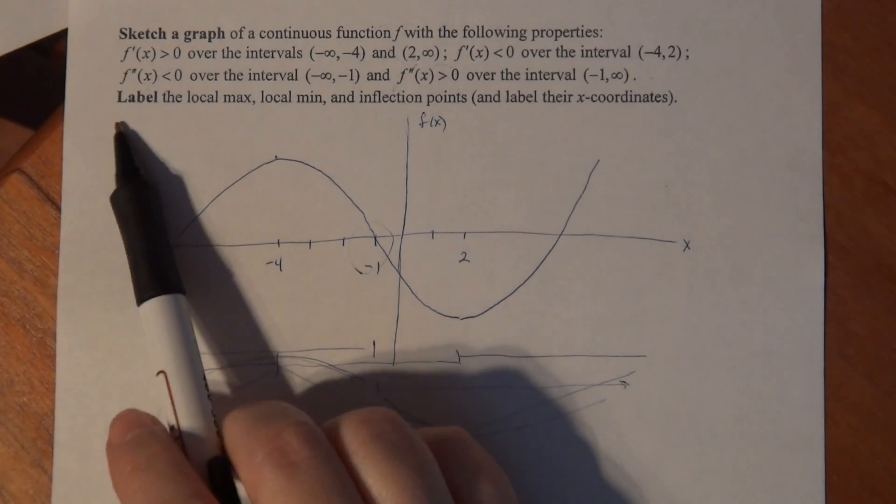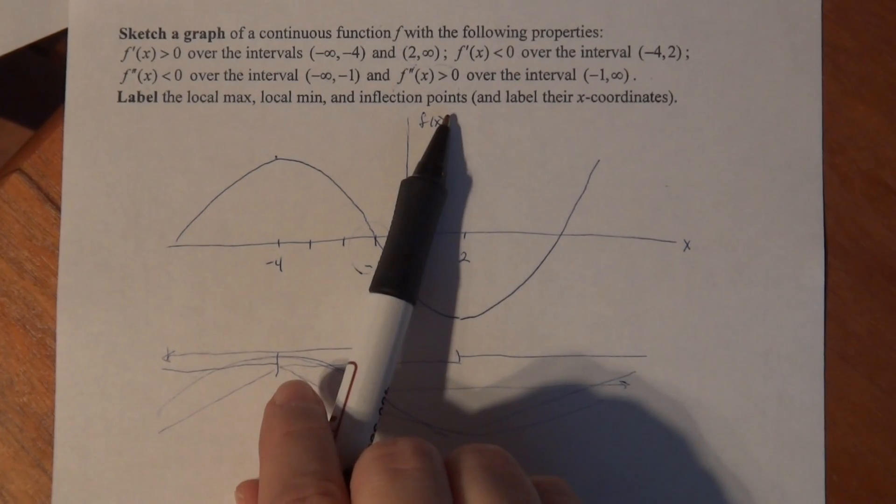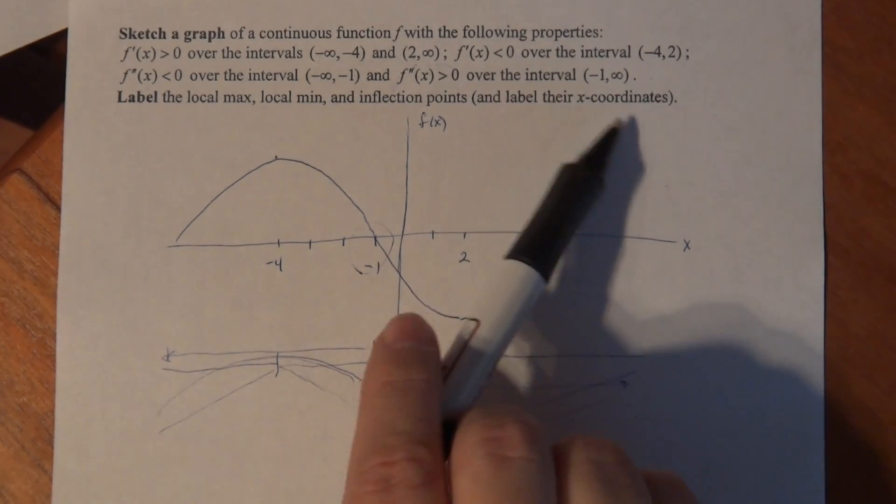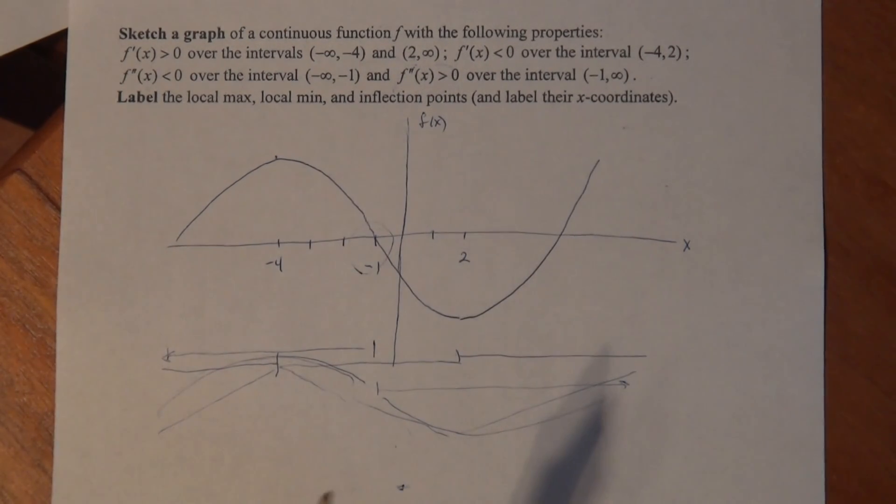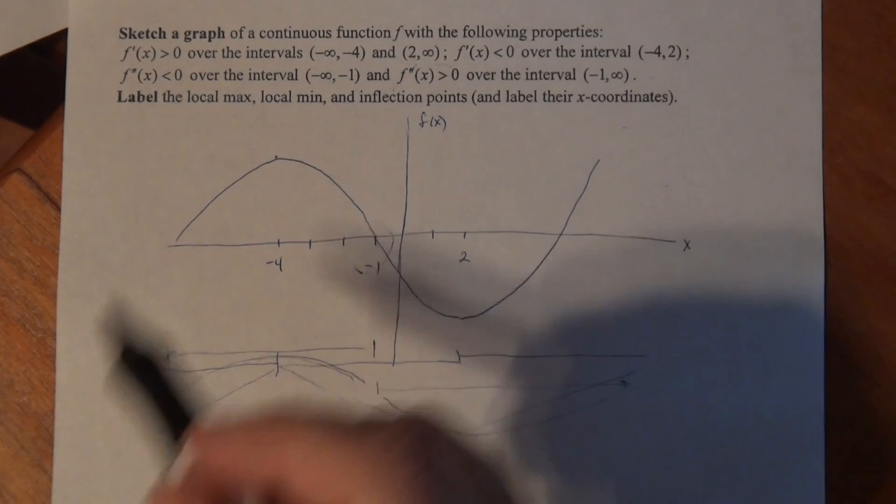So now the last thing says label the local max, local min, and inflection points. And label their x-coordinates. Make sure when you do problems that you read the whole thing and you answer all the questions. Always go back in the end and say, did I answer all the questions? Quit being in a hurry.